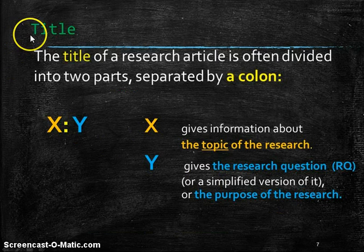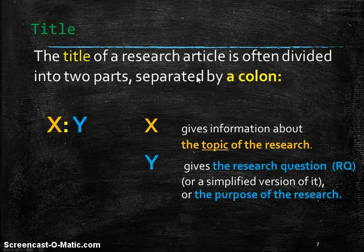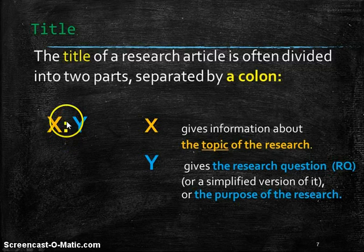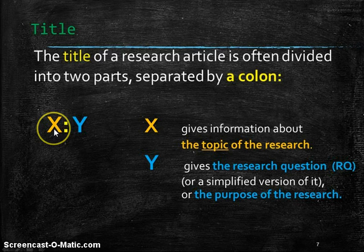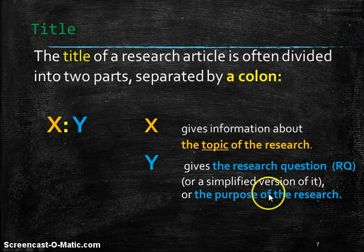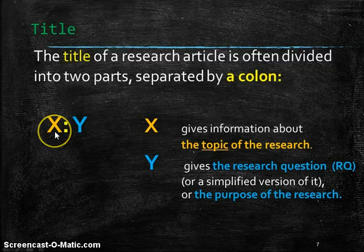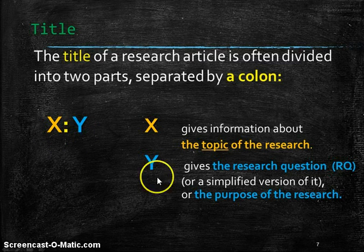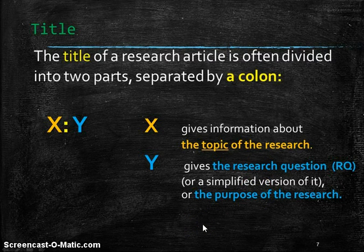We're going to start with the title. That's always a good place to start. And if we look at the title of a research article, it always has two parts. And it's divided by a colon. It starts with, let's say, X, and this gives us the topic of the research. And then Y, which gives us either a research question or the purpose of the research. And what we're looking for is the relationship between the two, the topic, and then the more specific research question or the purpose. Let's take a look at some examples.